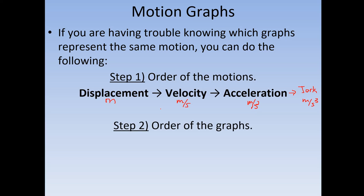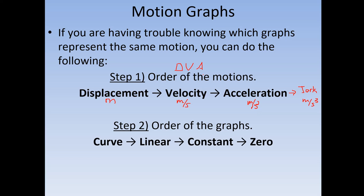The second thing to remember is what I call the order of the graphs. So you need to know two things: the order of the motions — which I simplify to DVA — and the order of the graphs. The order of the graphs goes from complex to basic: curved graphs, linear graphs, constant graphs, and zero.